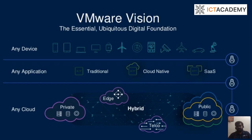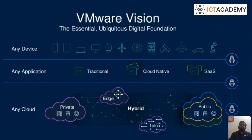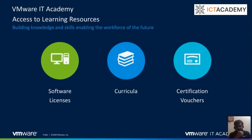VMware started with a vision of being a virtual organization, creating software and products around virtual environments — from physical data centers to virtual data centers, physical networks to virtual networks, and physical storage to virtual storage. These were the early product evolutions. Now we are looking to be a multi-cloud organization, and in that focus we have many offerings helpful for students and enterprises.